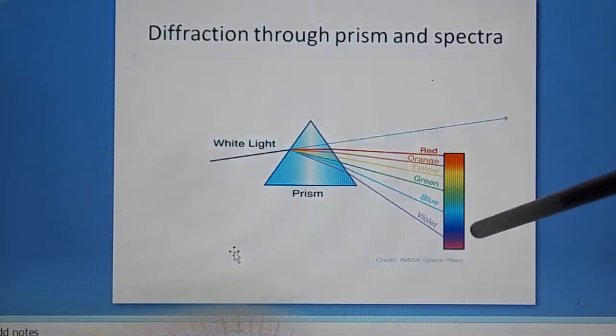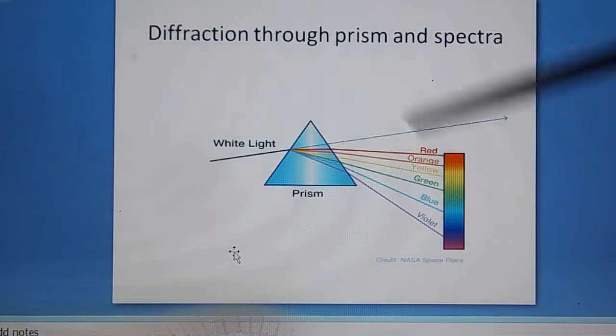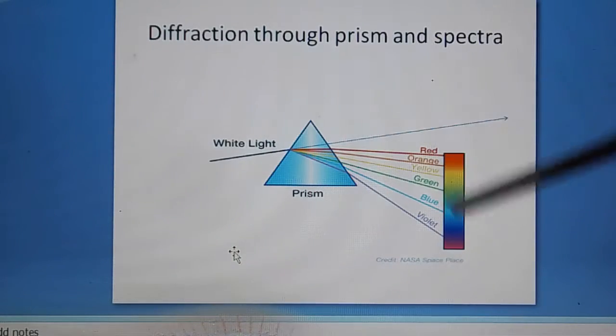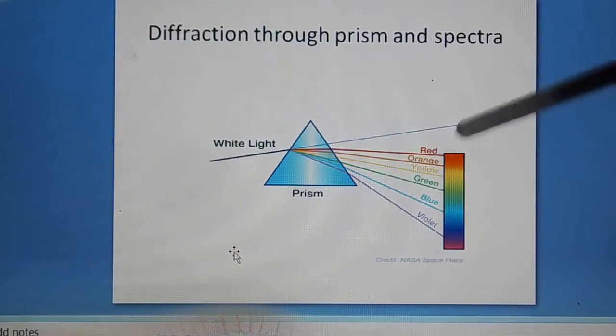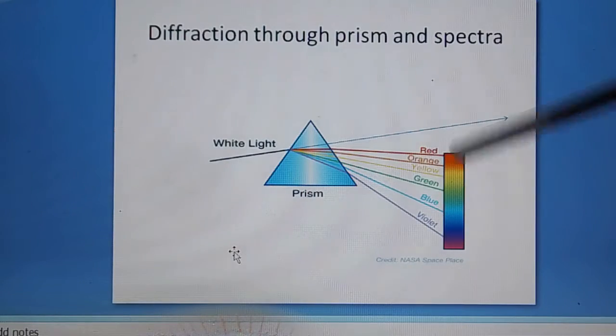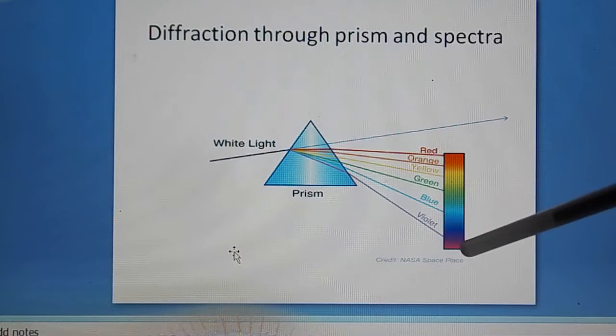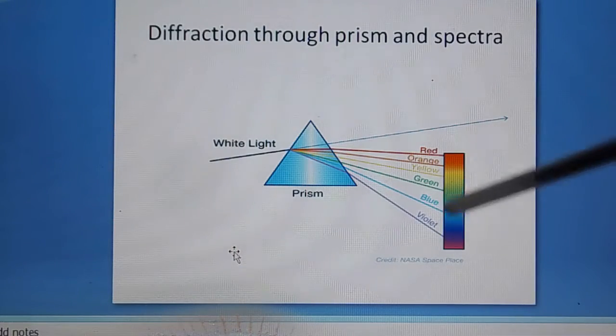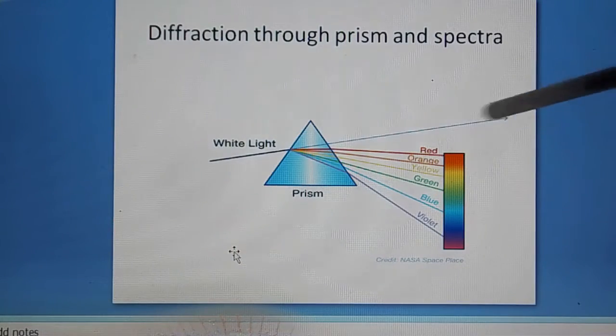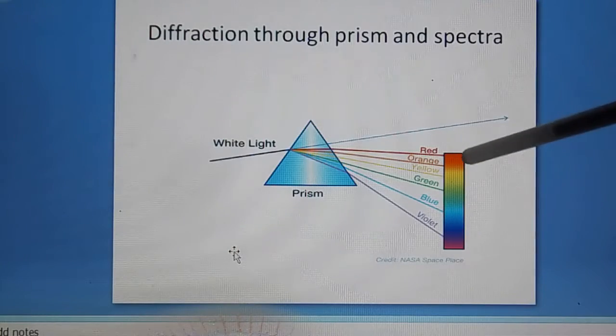Can you explain why a diffraction grating and prism are behaving like this? This is entirely different. Or is it a correct explanation? Here in a prism, violet is maximum deviated from the original line and red color minimum deviation.